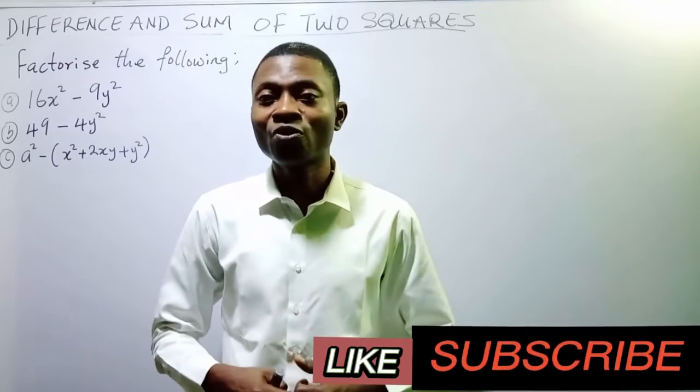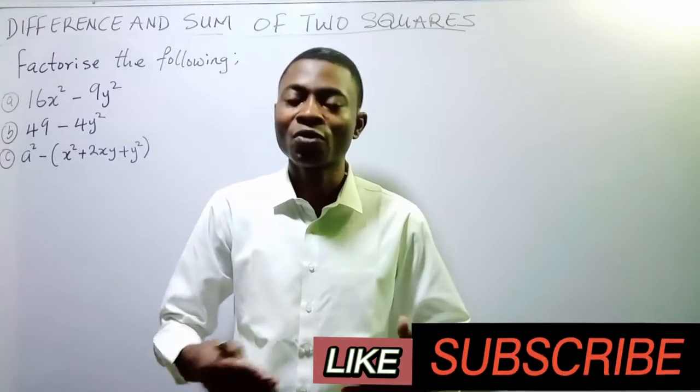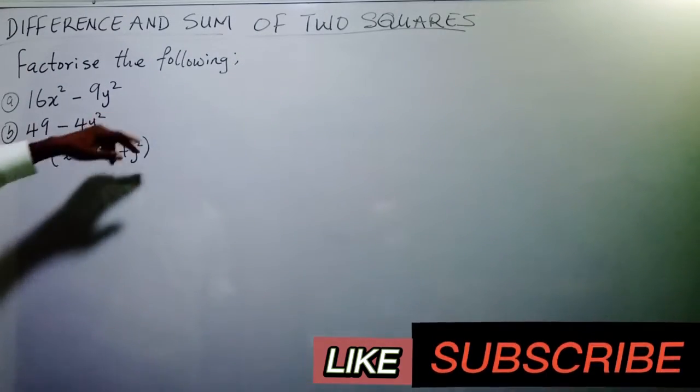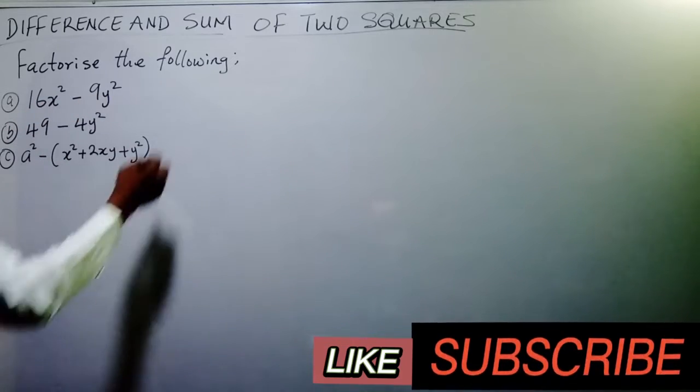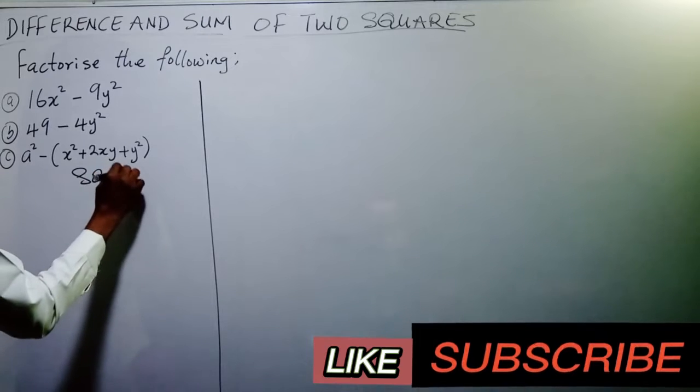Remember the previous video we uploaded, we explained the difference between difference of two squares and the sum of two squares. Now we have three questions here on the board. The first one says we should factorize 16a square minus 9y square. What are we going to do? Let's take the first one. You write solution.